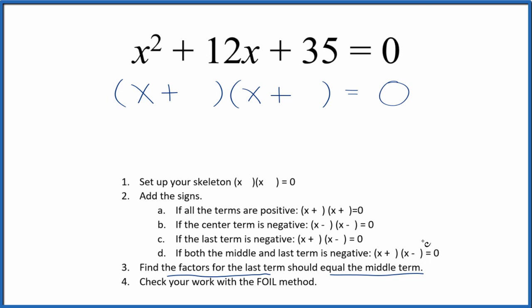If you know your factors of 35, I know that 7 times 5 is 35 and 7 plus 5 is 12. So if I put a 7 here and a 5 here, we've factored the equation x squared plus 12x plus 35 equals zero.